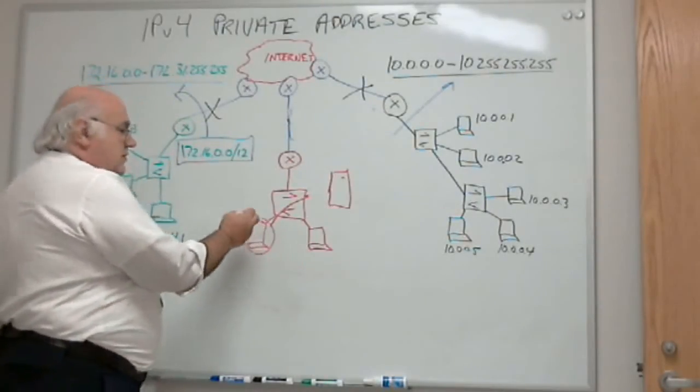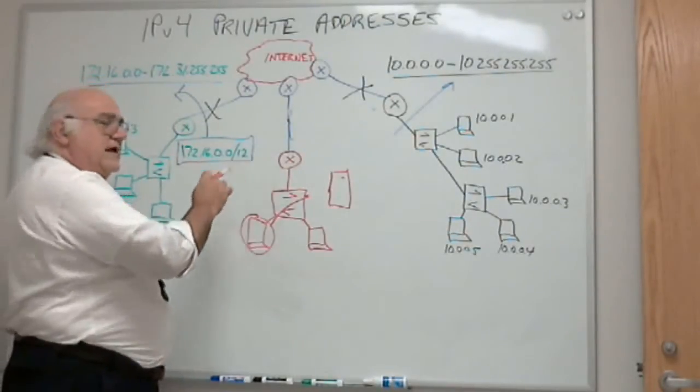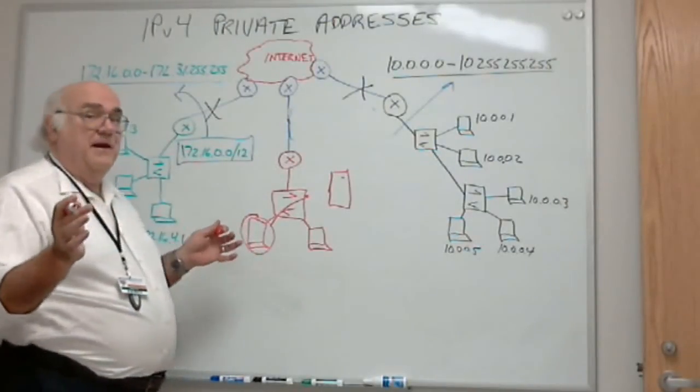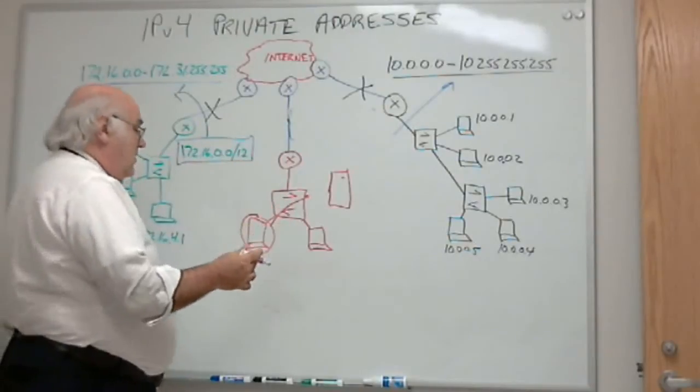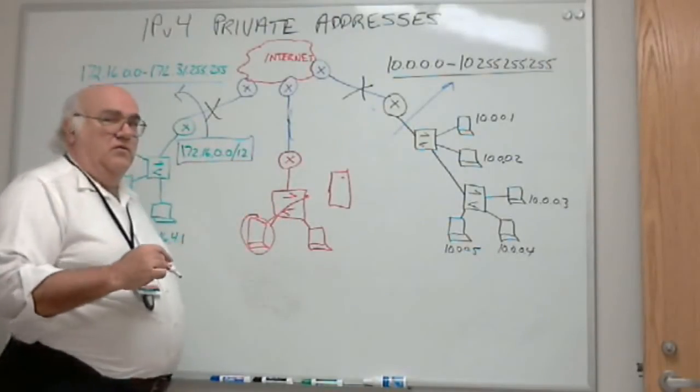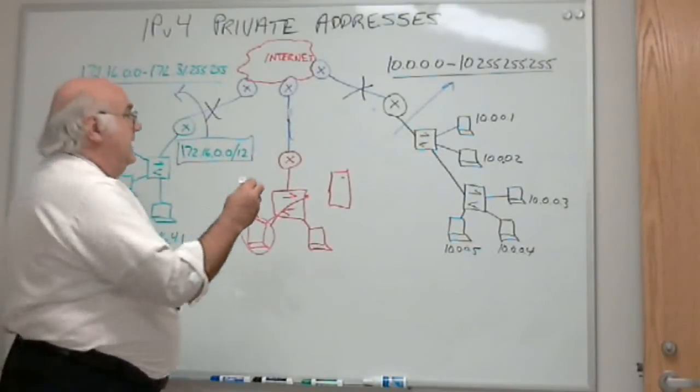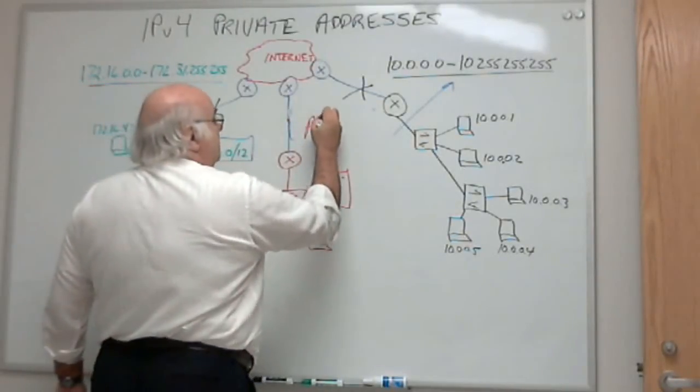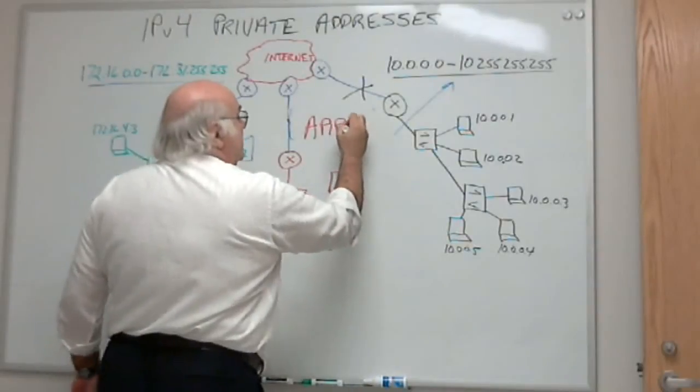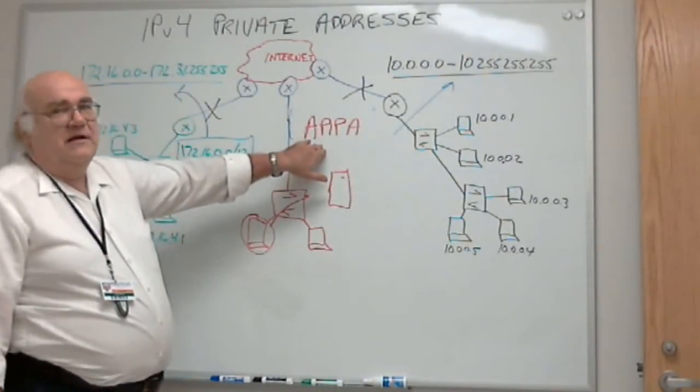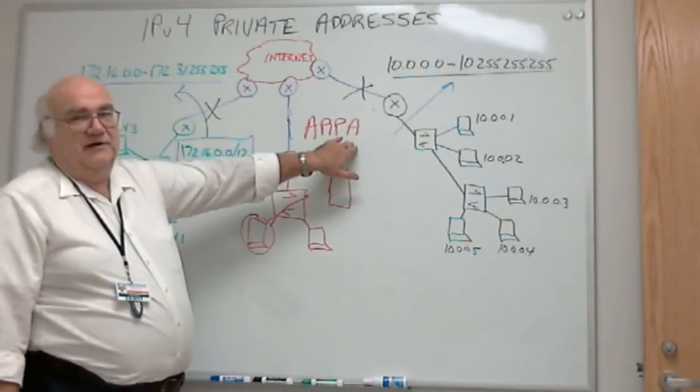Now I've got a computer that comes online. He goes and he says, hey, I need an IP address. Nobody home. Nobody home to give him an IP address. So if he's running Windows, he's going to use a little service called APIPA.